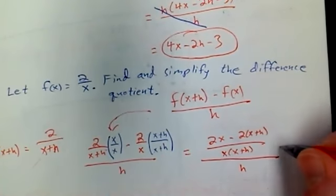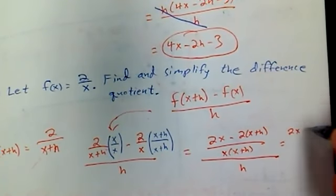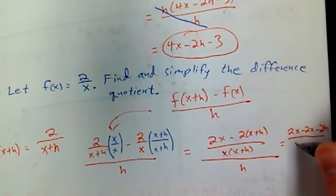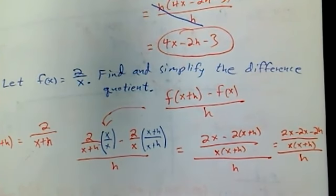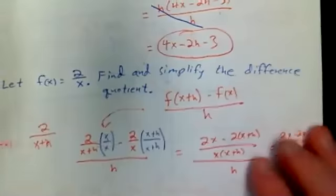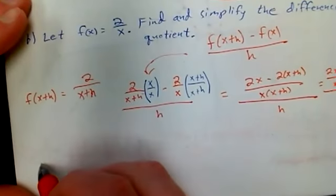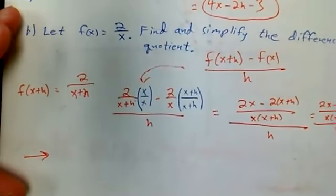Now I'll distribute. So I'll get 2x minus 2x minus 2h all over x times (x+h) all over h. Let's go down here. Let's simplify a few things.